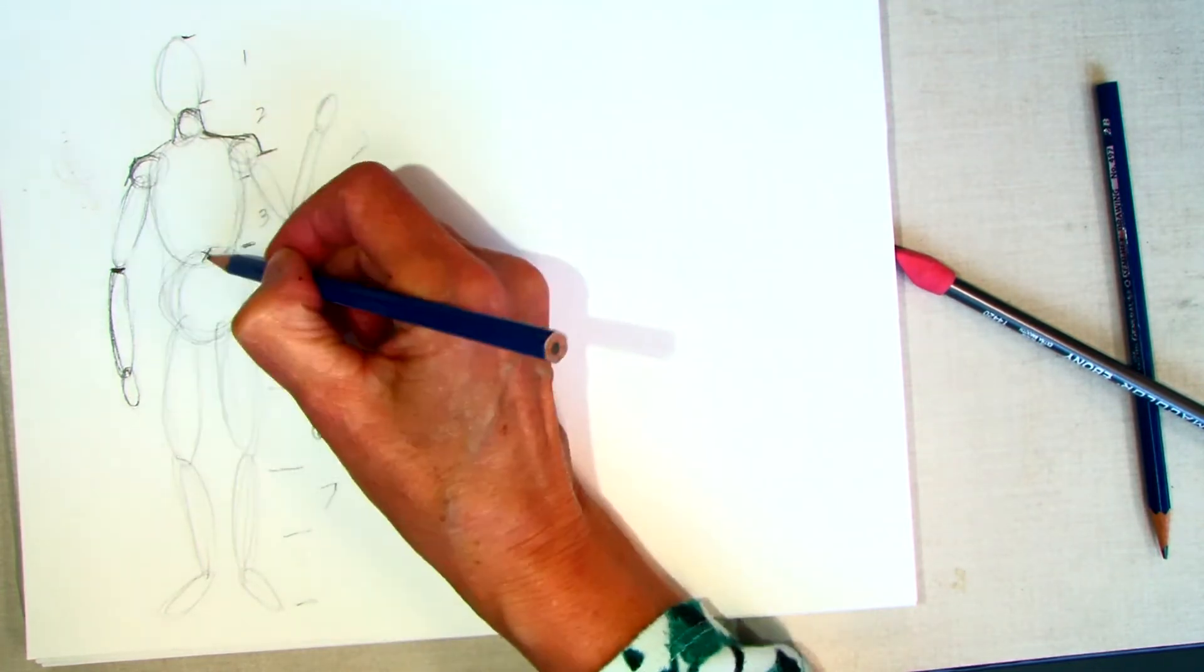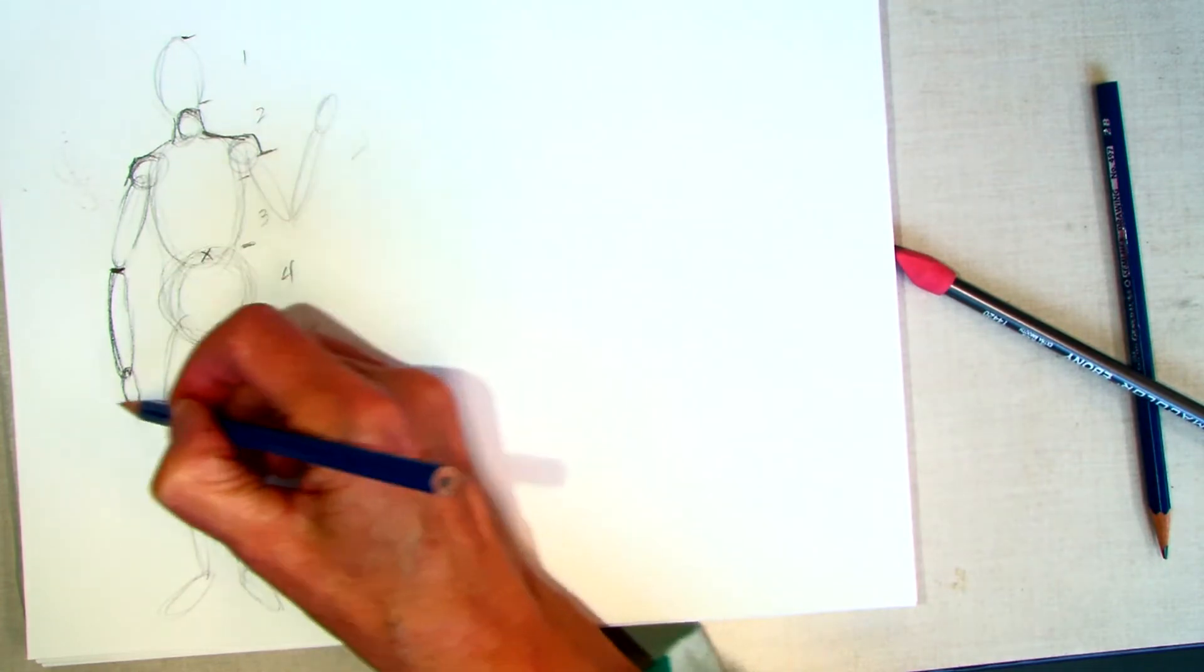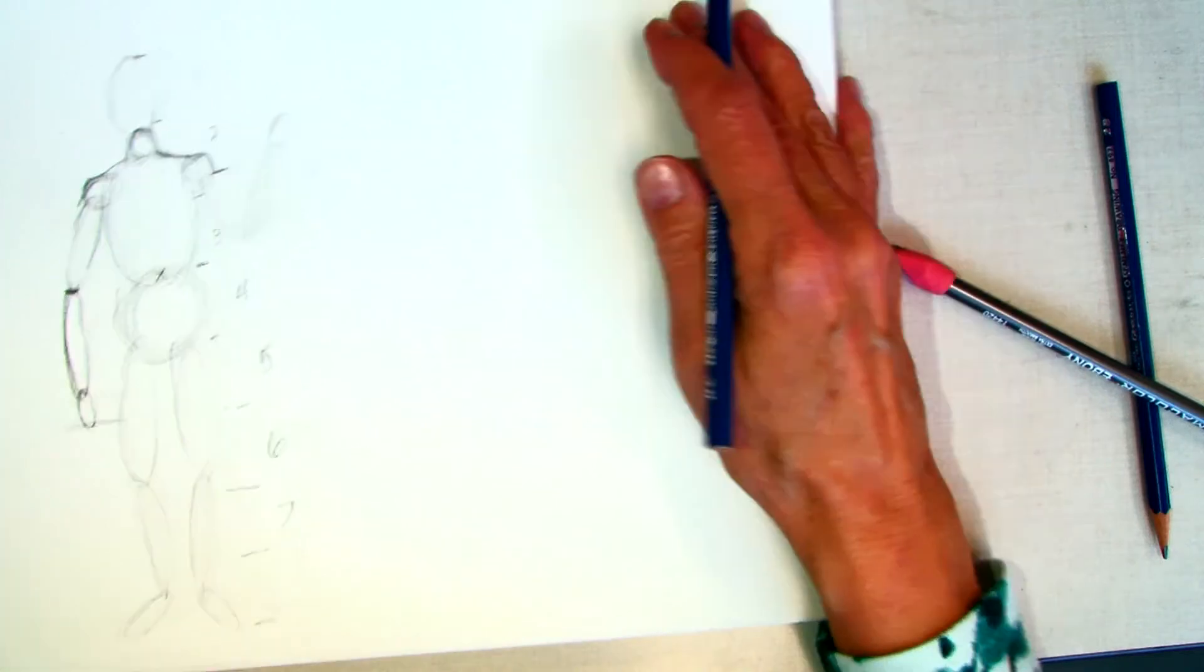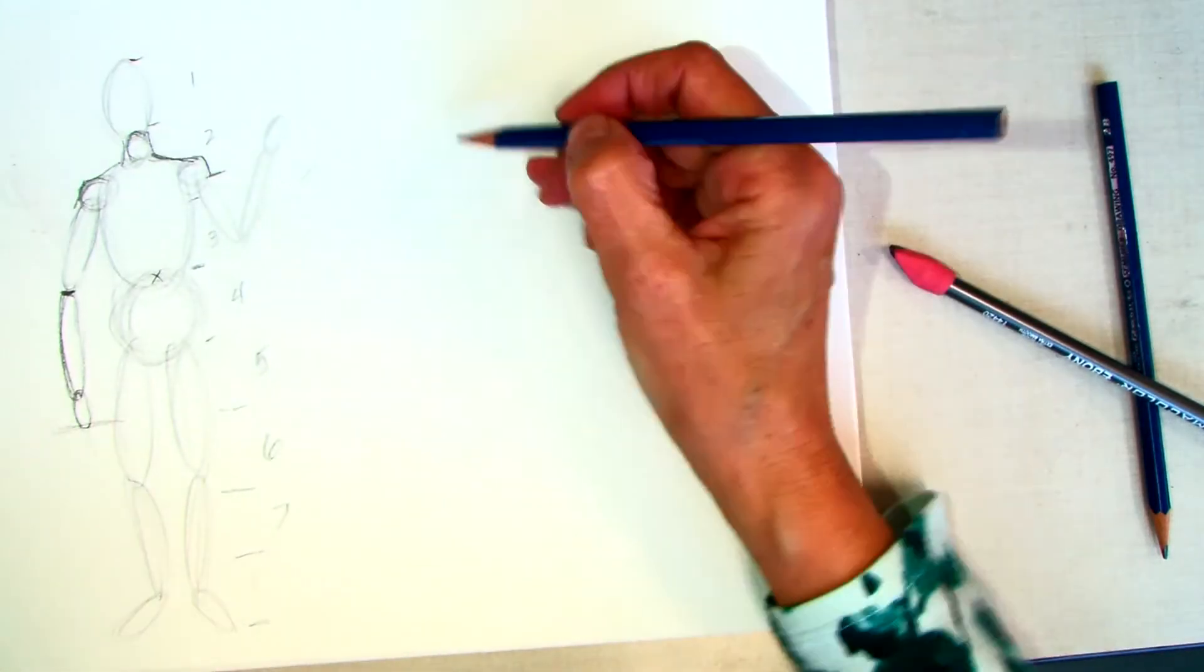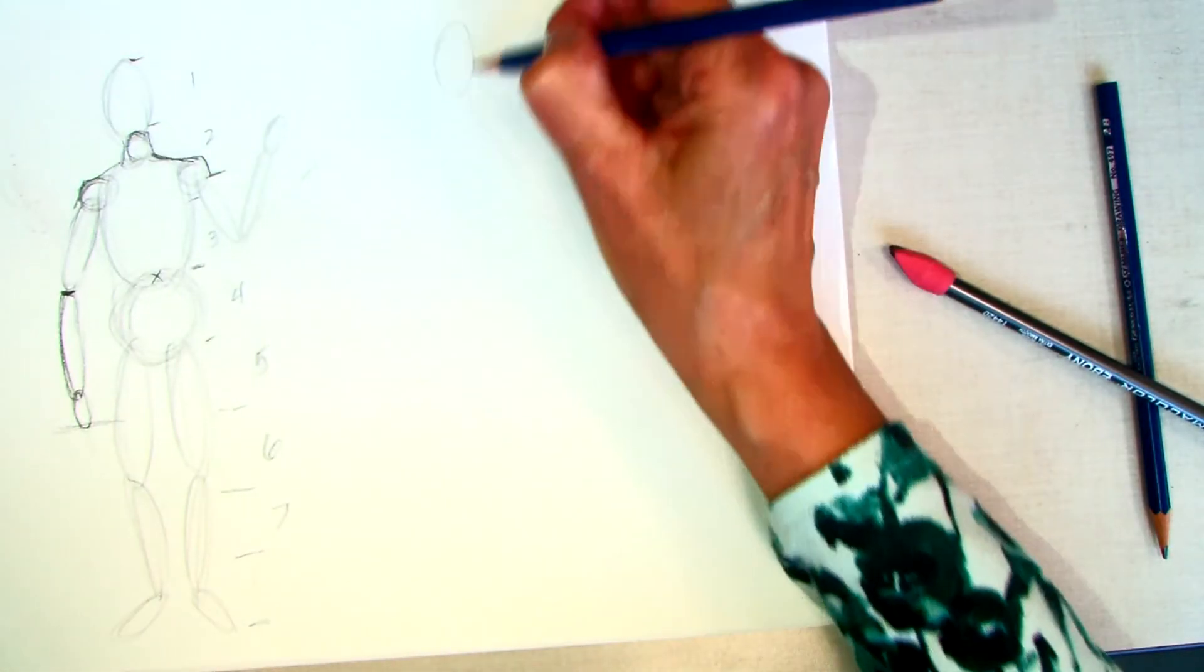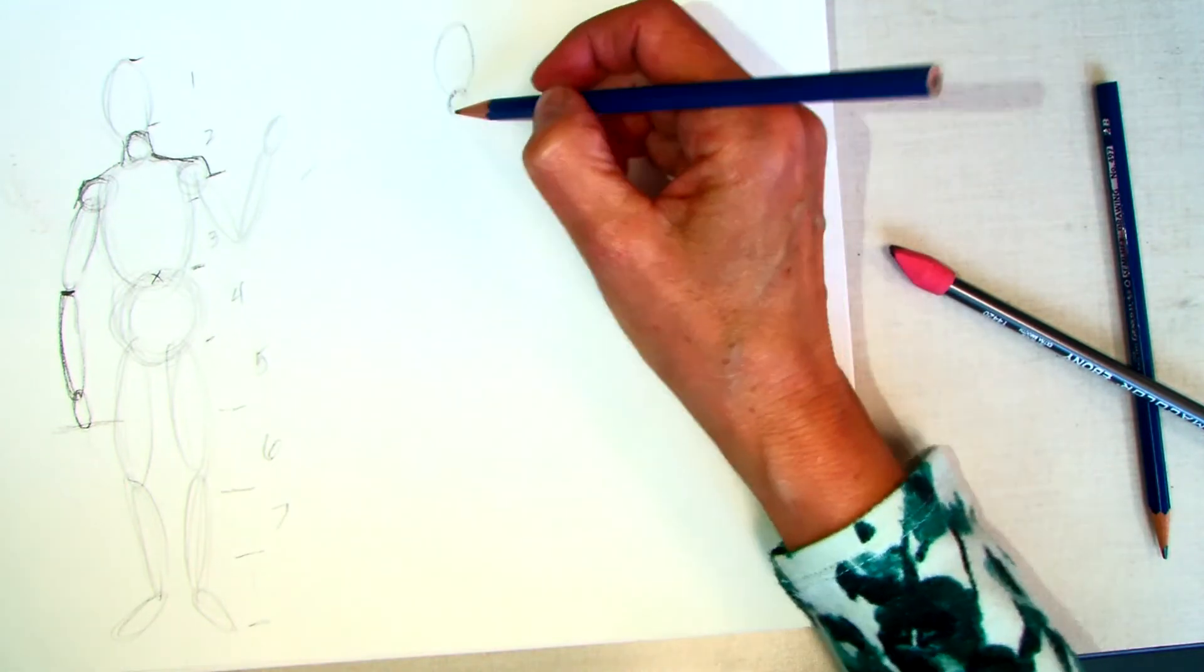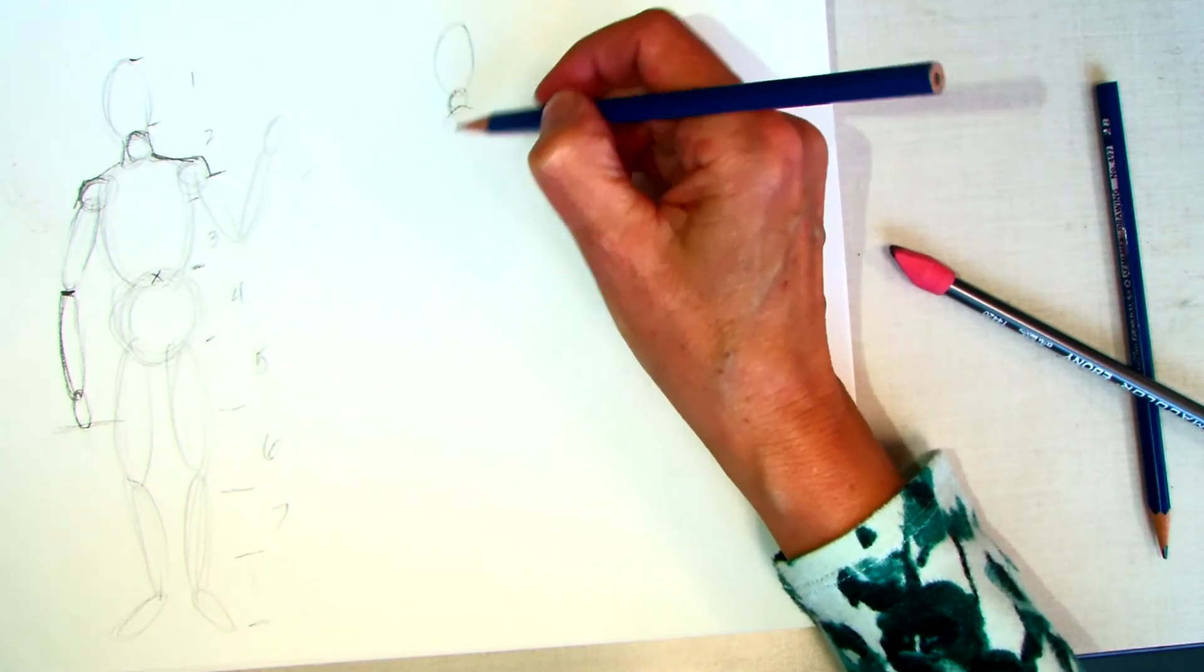The elbows are even with the belly button, but the hands hang down almost mid-thigh there. So when you are drawing this, keep those proportions in mind. I'm going to real quickly draw another one. This one I will do a side view because I did that in class.